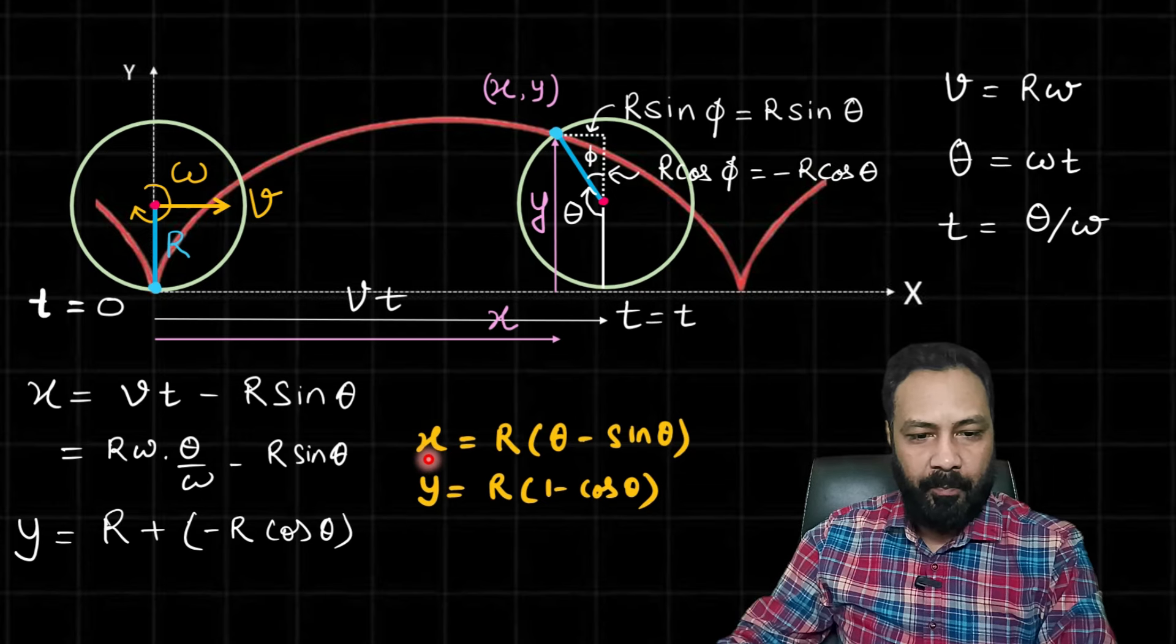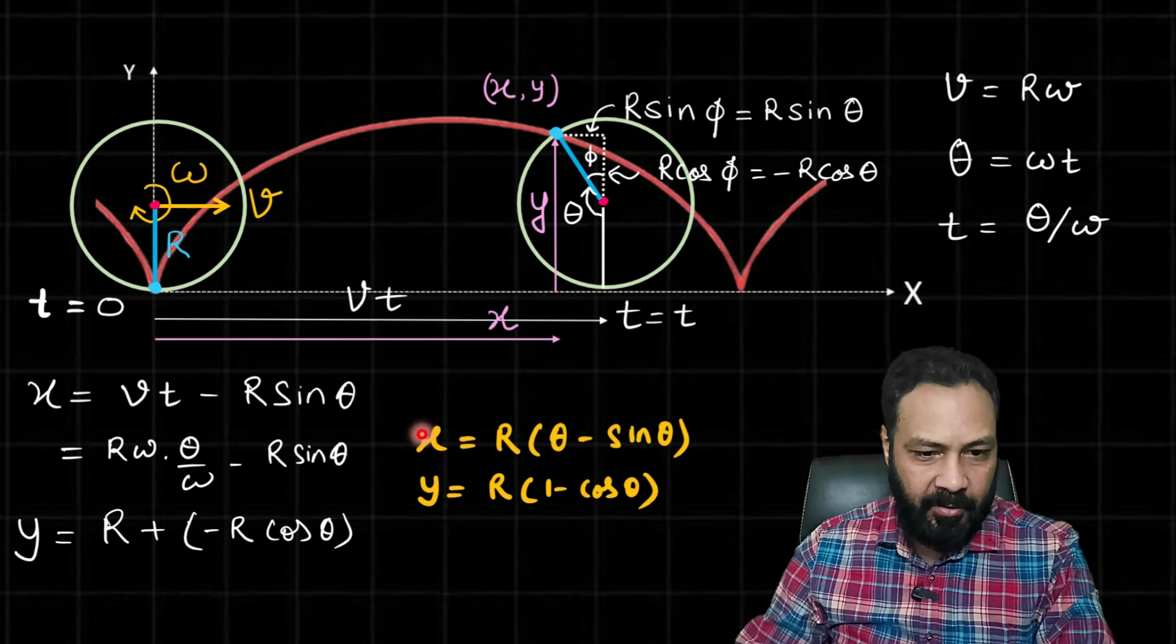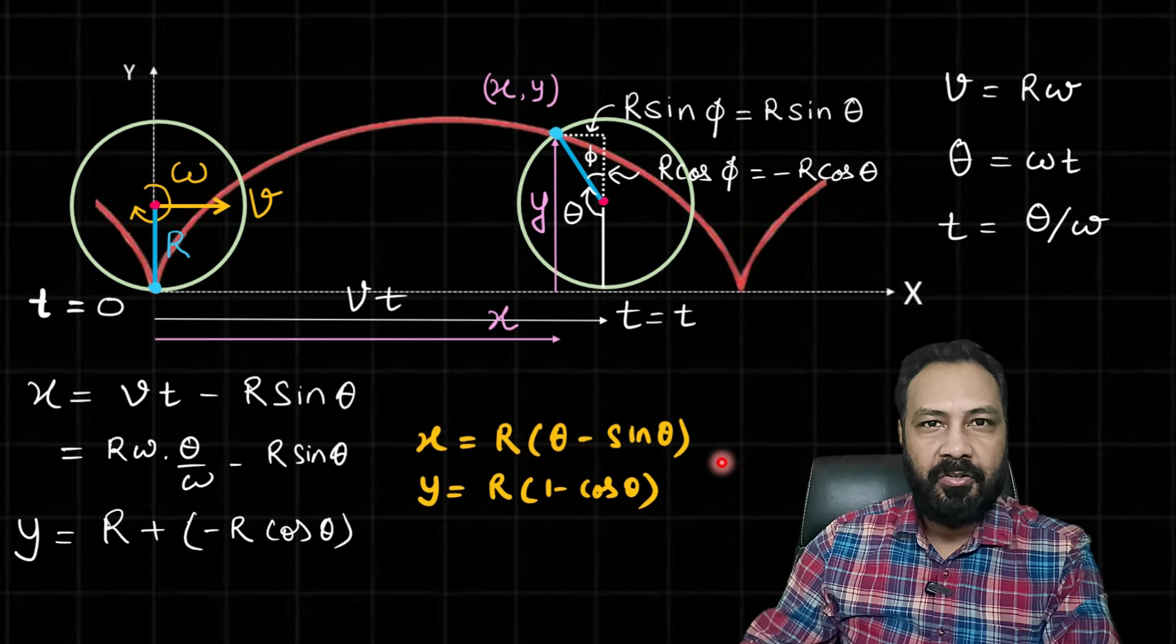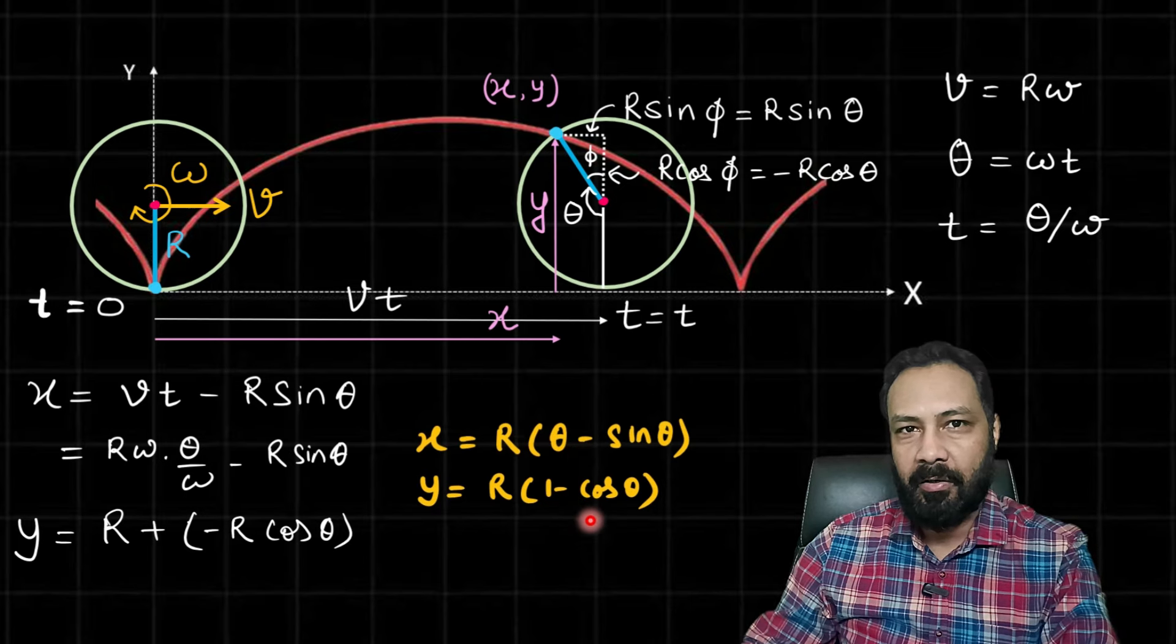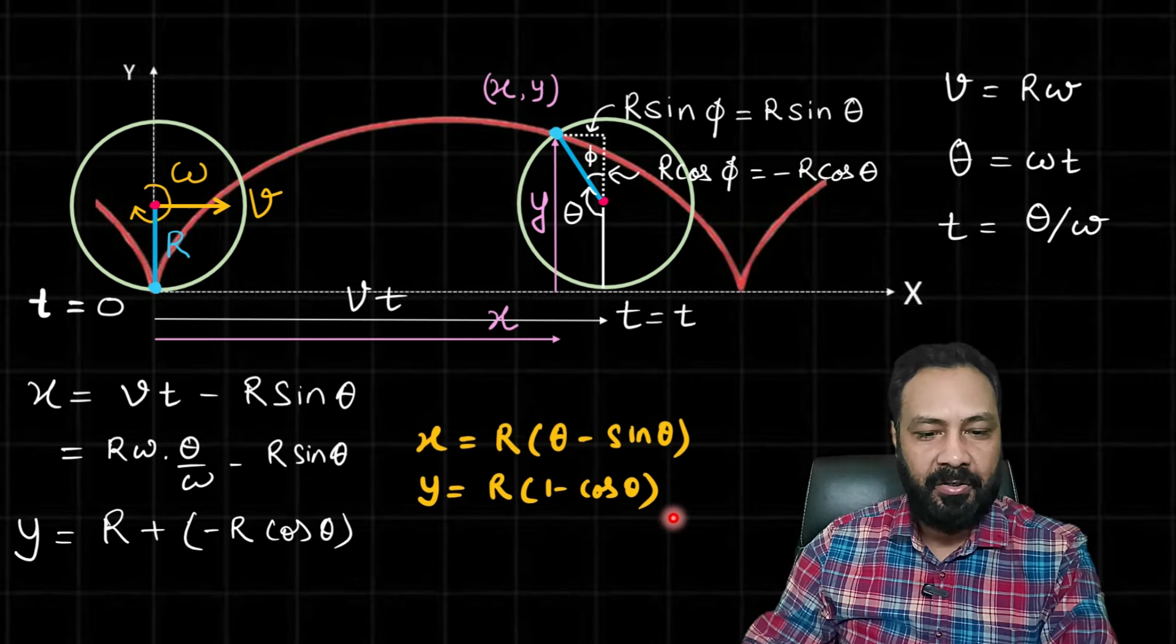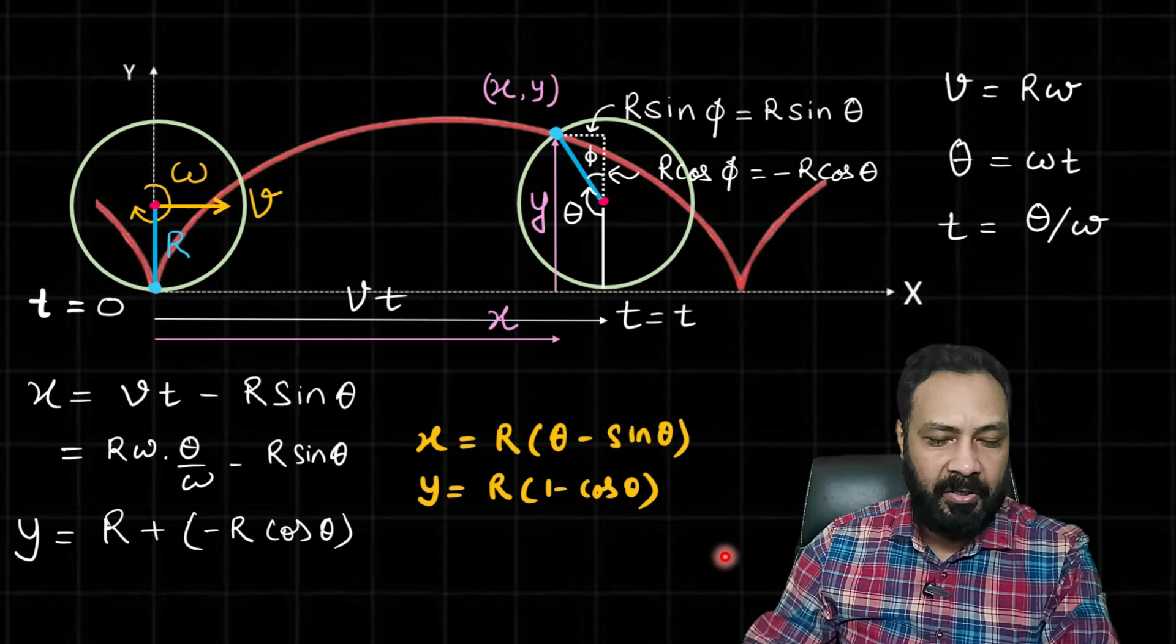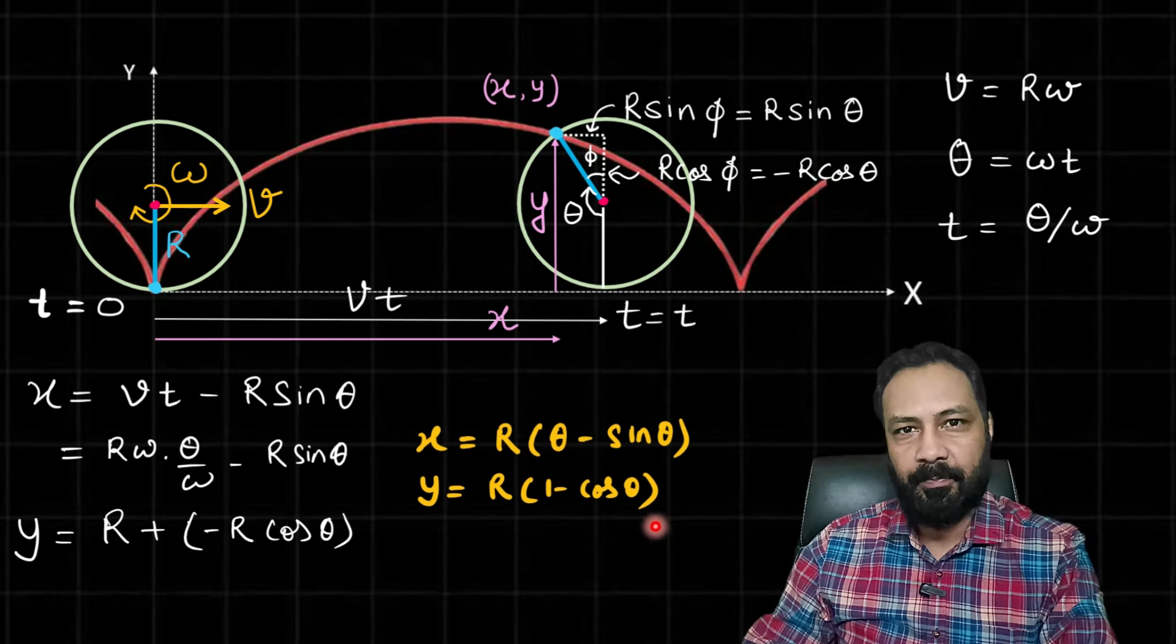So we have derived the parametric equation. x = r(theta - sin(theta)) and y = r(1 - cos(theta)) is the parametric equation of a cycloid in terms of parameter theta. Thank you.